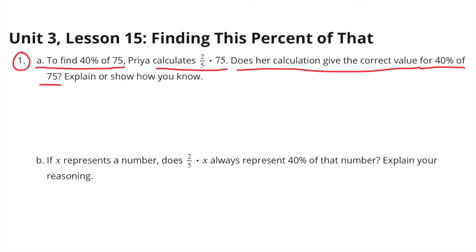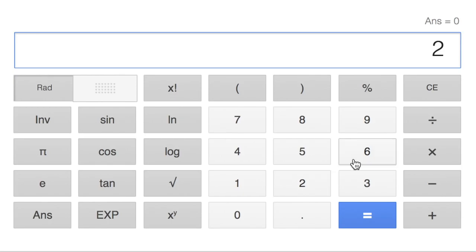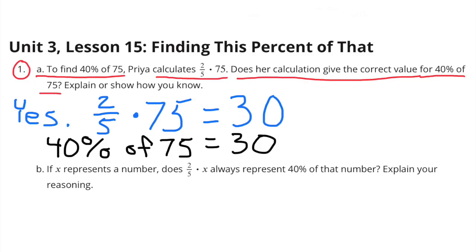Number 1, part A. To find 40% of 75, Priya calculates 2 fifths times 75. Does her calculation give the correct value for 40% of 75? Explain or show how you know. I'll show you how you can use a calculator to solve this. 2 divided by 5 times 75 equals 30. That's the same as 40% times 75 equals 30, or 40% of 75 is 30. So yes, Priya's calculation does give the correct value for 40% of 75.